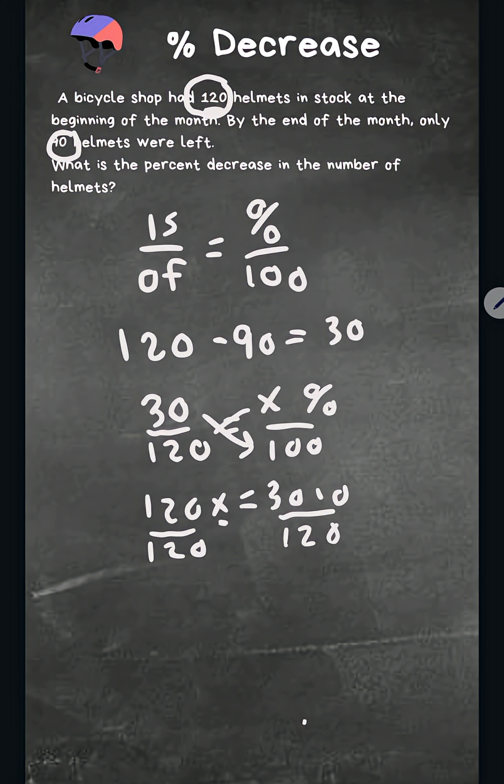Okay, and so these cancel. We bring down x equals and 3,000 divided by 120 is 25.